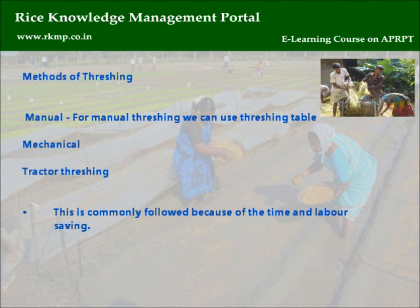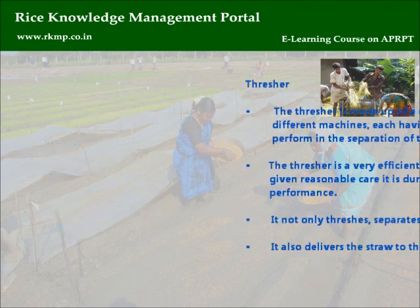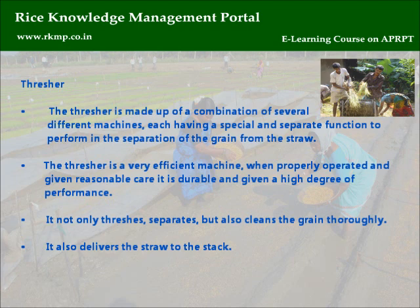Methods of threshing: manual — using a threshing table; mechanical; and tractor threshing, which is commonly followed because of time and labor saving. The thresher is made up of a combination of several different machines, each having a special and separate function in the separation of grain from straw. It is a very efficient machine when properly operated and given reasonable care. It is durable and delivers high performance. It not only threshes and separates, but also cleans the grain thoroughly and delivers the straw to the stack.